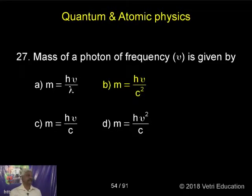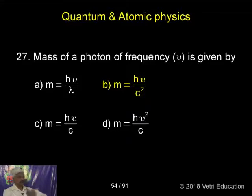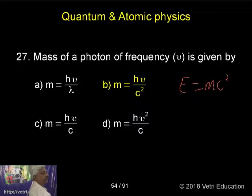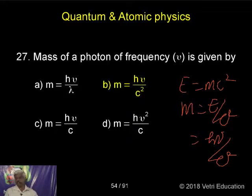The mass of a photon of frequency ν is given by m = E/c², because E = mc², therefore m = E/c². Since E = hν, the mass of the photon is m = hν/c². This is the mathematical manipulation: starting from the energy equation E = mc², we get m = E/c², and since E = hν, we simply substitute to get m = hν/c².